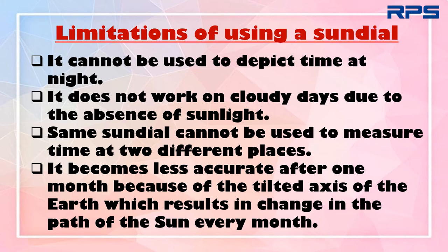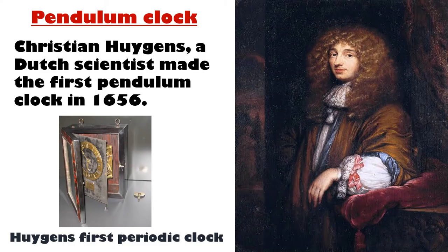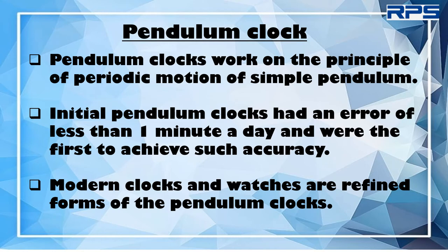Due to such limitations, the devices used in ancient days were gradually replaced by modern devices. Some modern devices for measurement of time are pendulum clocks, quartz clocks, atomic clocks, and stopwatches. Christian Huygens, a Dutch scientist, made the first pendulum clock in 1656. Pendulum clocks work on the principle of periodic motion of a simple pendulum. Initial pendulum clocks had an error of less than one minute a day and were the first to achieve such accuracy. Modern clocks and watches are refined forms of pendulum clocks.